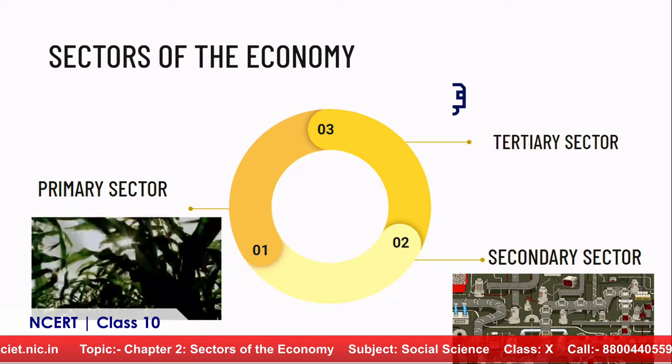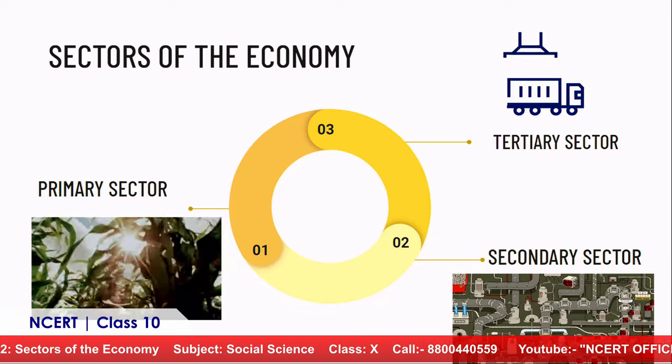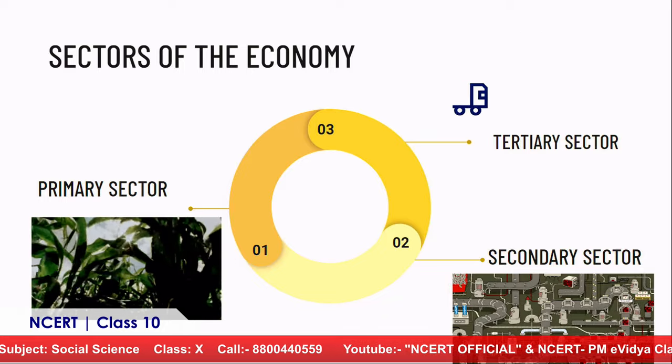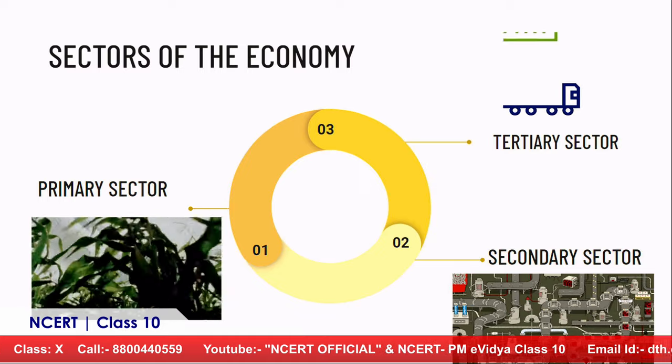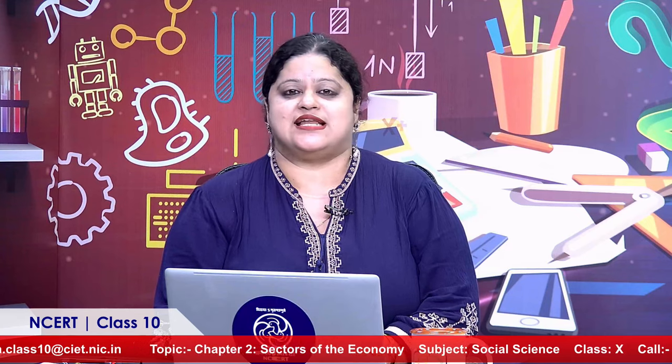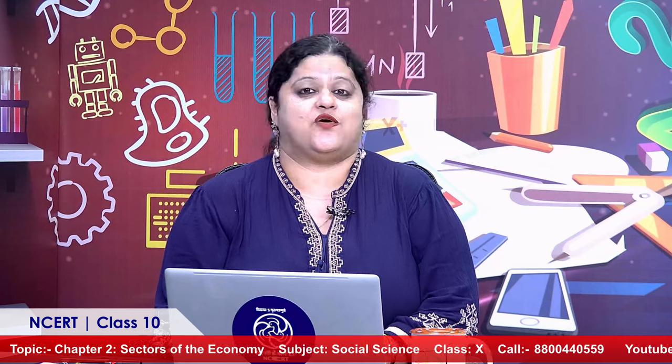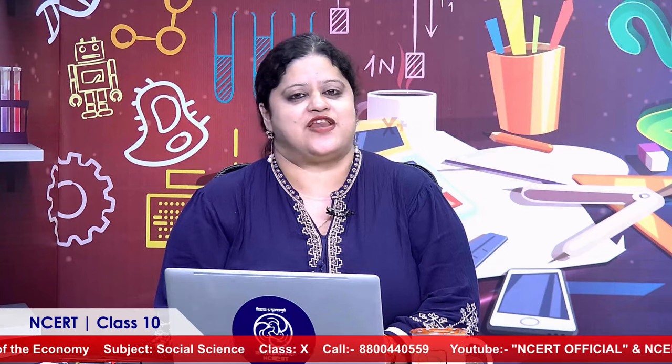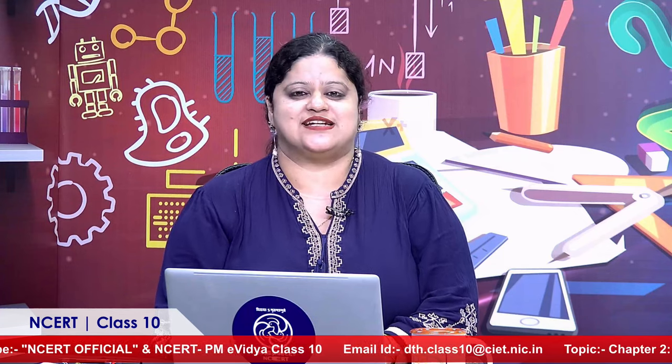Let us start with the primary sector. There are certain occupations where the input itself is a natural resource. For example, a farmer growing a crop uses natural resources — land, water, and raw materials. What is being produced, say cotton, is a natural good produced with the help of natural resources. Similarly, animal husbandry — such as the production of milk through animal rearing — also belongs to the primary sector. Primary sector is not just farming; it includes other allied activities associated with natural resources.